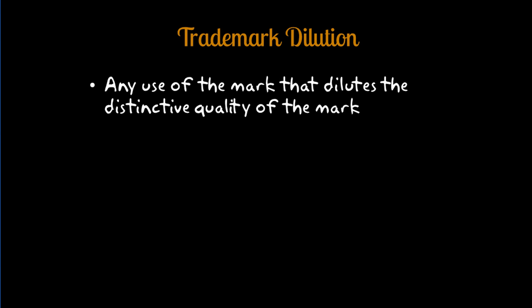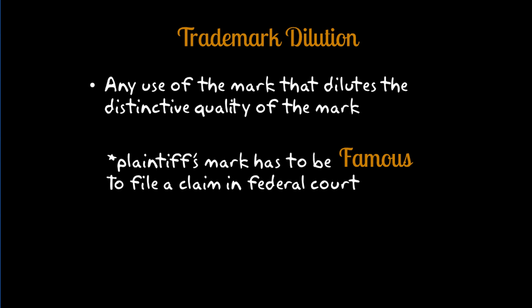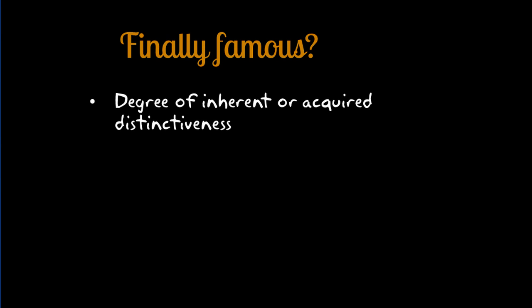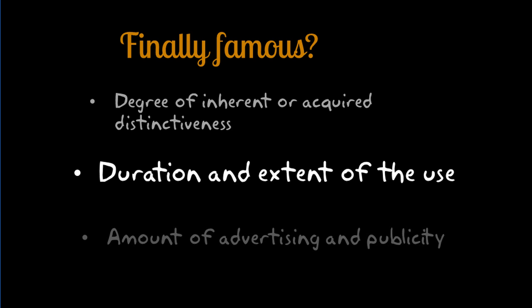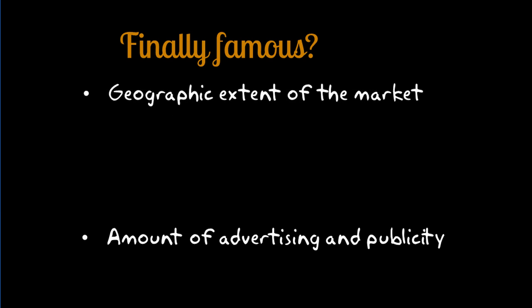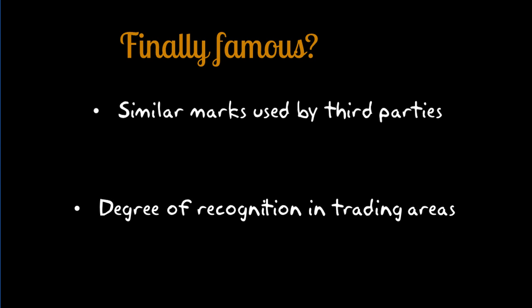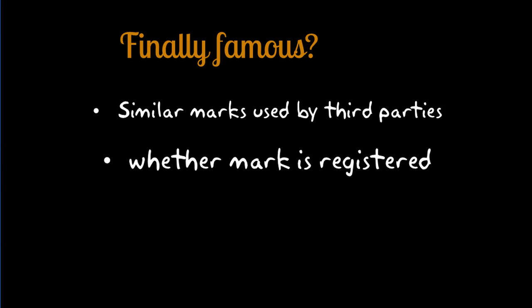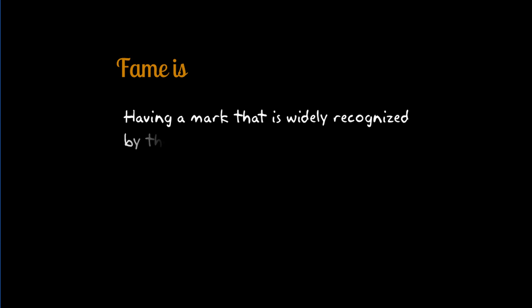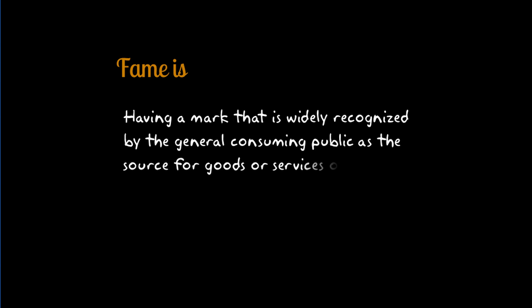The next cause of action lies in trademark dilution. Trademark dilution can be brought against any use of a mark that dilutes the distinctive quality of the mark. In federal court, a plaintiff's mark has to be famous in order to file suit. Factors courts consider when determining if a mark is famous include the degree of inherent or acquired distinctiveness, the duration and extent of use, the amount of advertising and publicity, the geographic extent of the market, the channels of trade, the degree of recognition in trading areas, any use of similar marks by third parties, and whether the mark is registered. A trademark is usually found to be famous if the owner can prove that the mark is widely recognized by the general consuming public as a designation of source for the goods or services of the mark's owner.